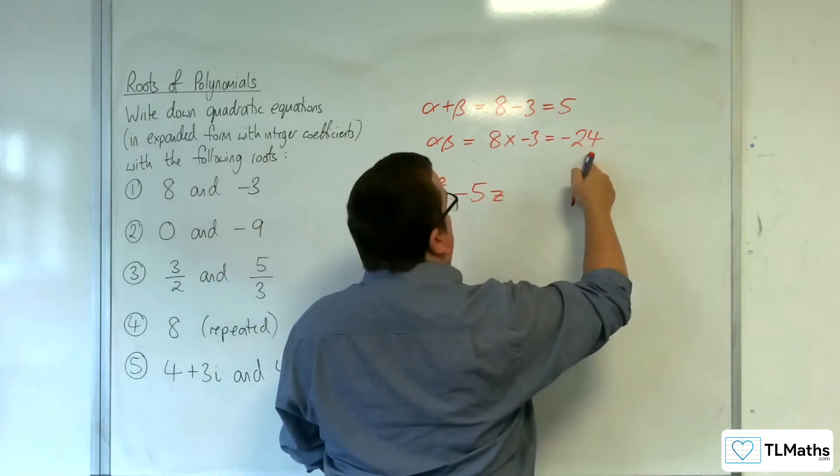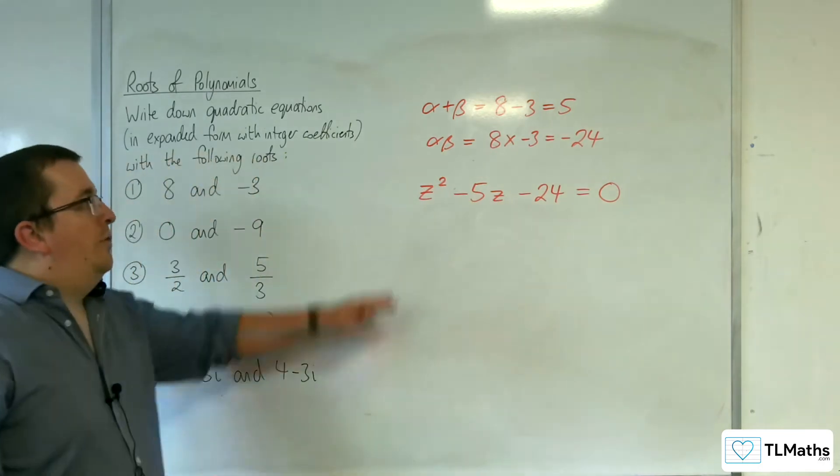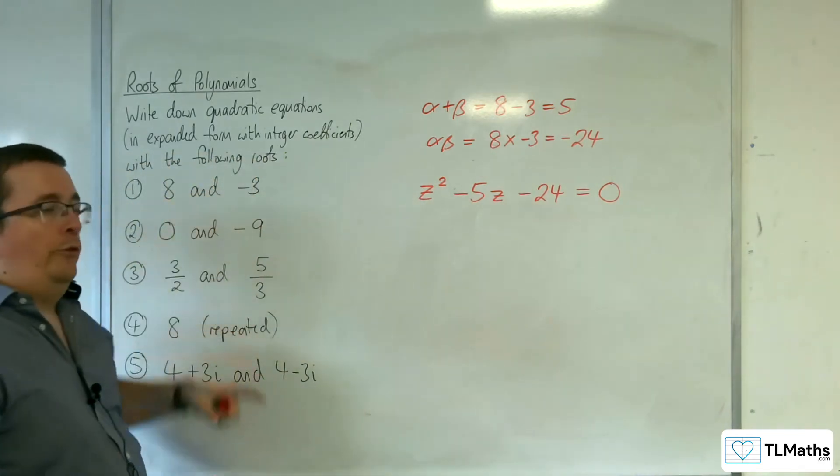Plus the product of the roots equals 0. And so that is the quadratic equation that I need that has those two roots.